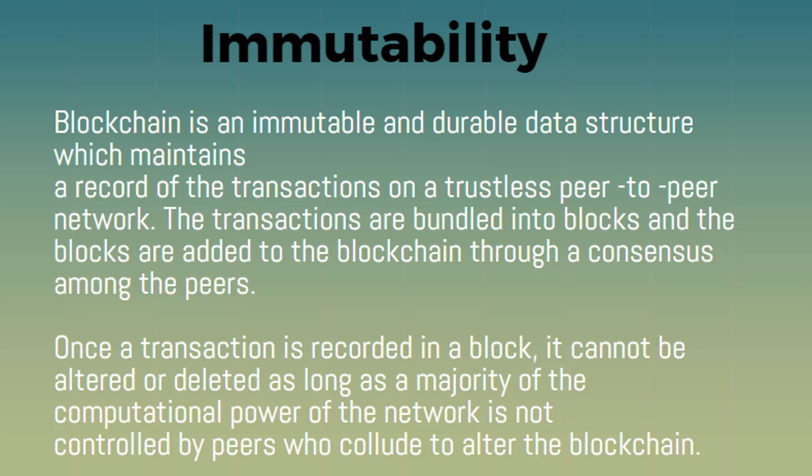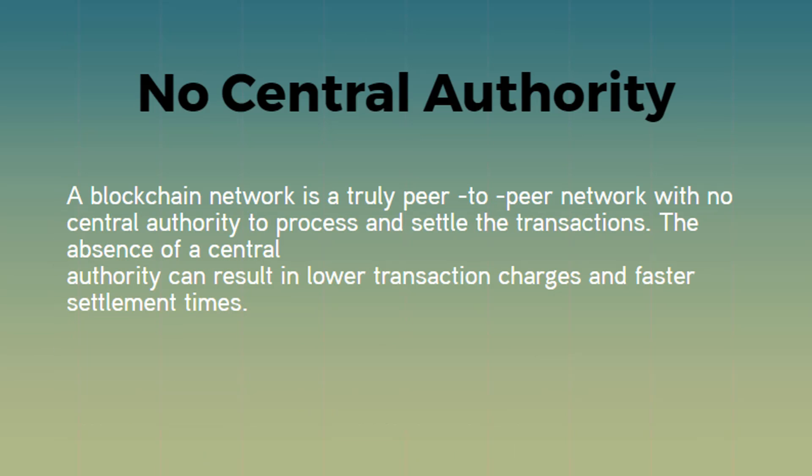This holds as long as the majority of the computational power of the network is not controlled by peers who collude to alter the blockchain. No central authority: a blockchain network is a truly peer-to-peer network with no central authority to process and settle the transactions. The absence of a central authority can result in lower transaction charges and faster settlement times.